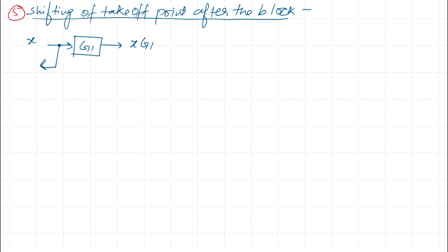Since the same signal x is at that point, the value of the takeoff point will also be x. Now, if you want to shift this takeoff point after the block, what will be the equivalent diagram?